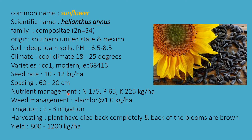Nutrient management: nitrogen 175 kg, phosphorus 65 kg, and potassium 225 kg per hectare; phosphorus and potassium applied in basal doses. Weed management uses alachlor at 1 kg per hectare. Irrigation: 2 to 3 times for the entire crop. Harvesting when plants have died back completely and the backs of blooms are brown. Yield is 800 to 1200 kg per hectare.